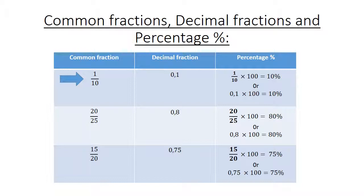20 over 25. The decimal fraction is 0,8. 20 over 25 times 100 equals 80%. Or 0,8 times 100 equals 80%.